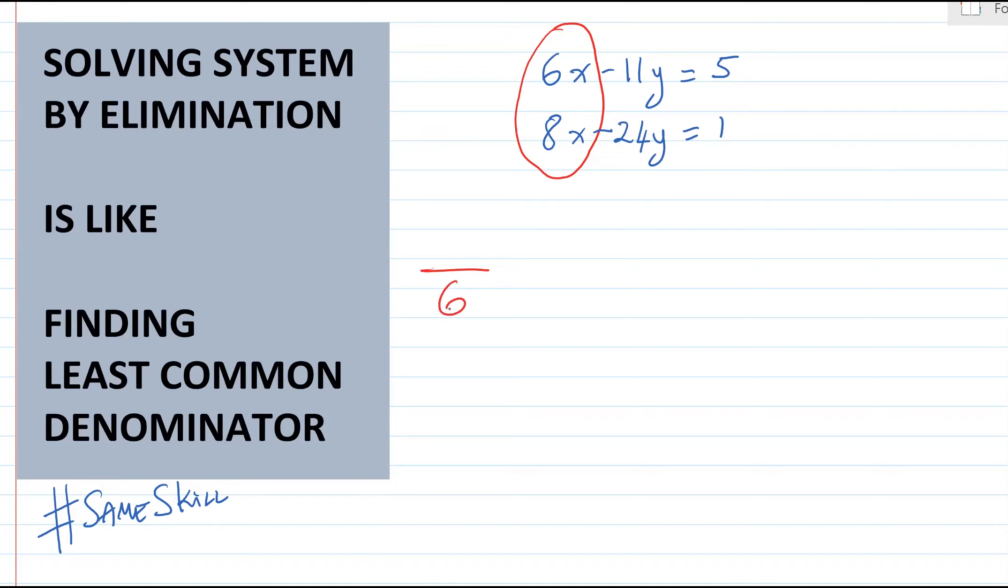If you have a fraction with denominator 6 and another fraction with denominator 8, what should the LCD be? 24, right? The common denominator should be 24.